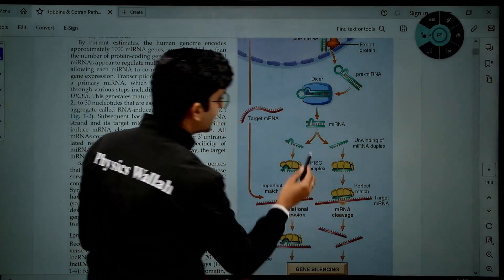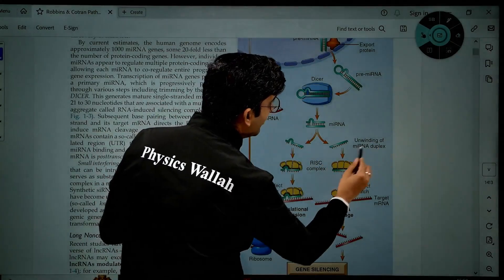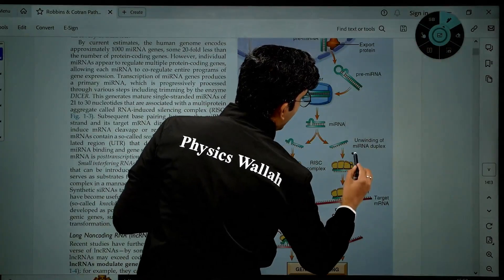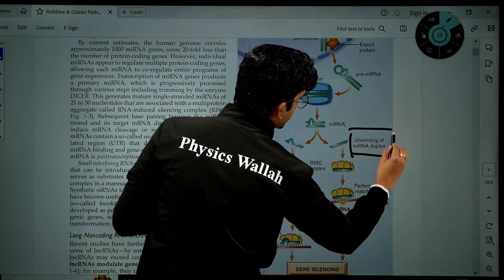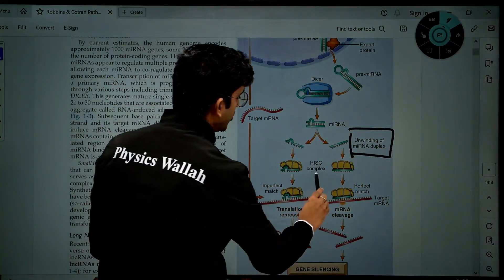This micro RNA, what happens is after it becomes a double-stranded protein, it becomes two single strands, or unwinding of this complex happens, which is an unwinding of an mRNA duplex. This is very important, which binds to something called a RISC complex.